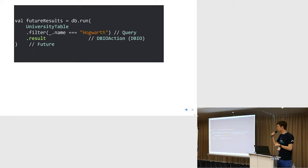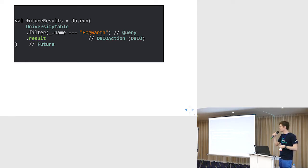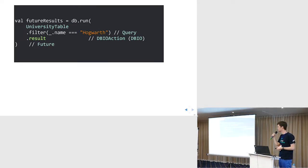To give you the whole picture: we have the university table which is a query. We are filtering it by name — we get a query. Then we are calling result and obtain the DBIO, the action. It is not fired yet. We need to run the db.run method, and then we will get the result from our operations.